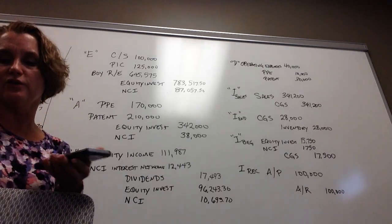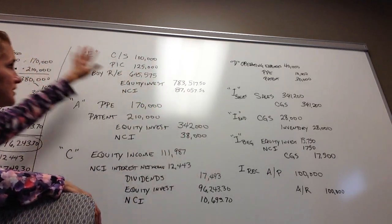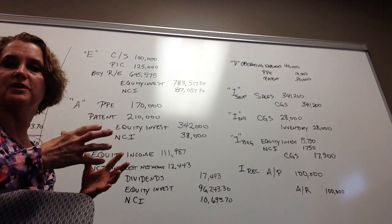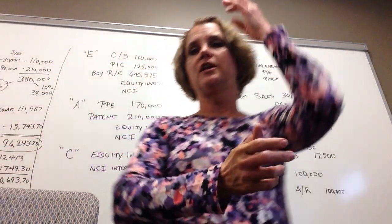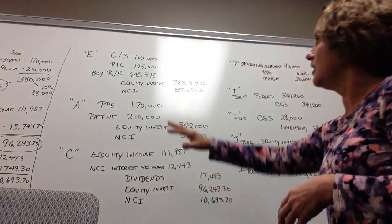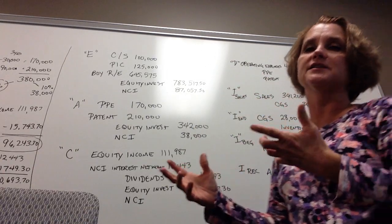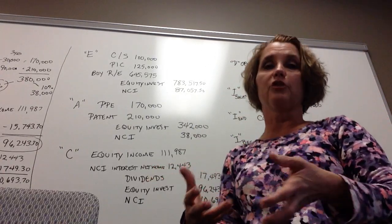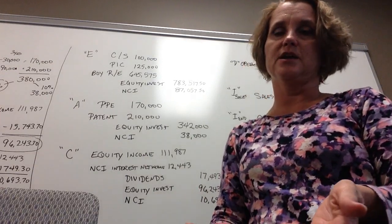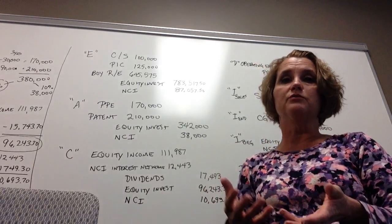Those are all of our I entries. You can now take all of these entries and put them into the Excel consolidation worksheet available on Blackboard. There are a lot of steps, but this is definitely more realistic — companies rarely have 100% of the stock outstanding, and there truly are non-controlling interest owners in most consolidations.